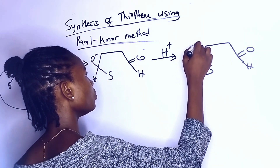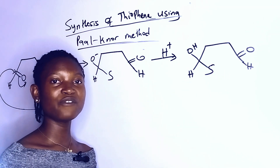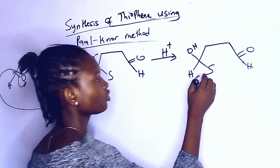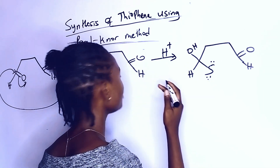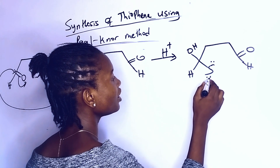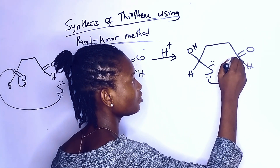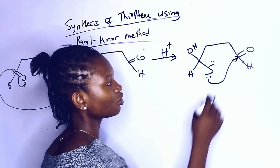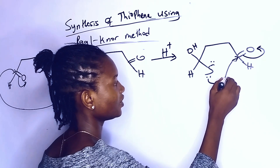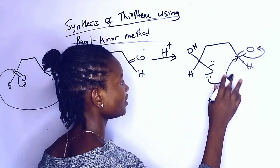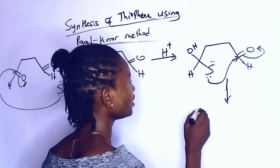Sulfur has lone pairs of electrons, so it is going to use one of its lone pairs to react with the second carbonyl carbon here — letting it touch the carbonyl carbon. One of the bonds on oxygen shifts, and we are going to have a new compound.